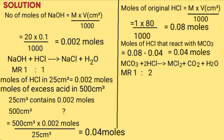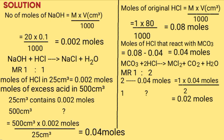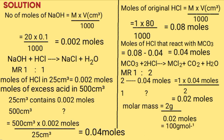Moles of MCO₃: since 2 moles of HCl corresponds to 1 mole of MCO₃, and we have 0.04 moles of HCl, moles of MCO₃ = 0.04 / 2 = 0.02 moles. Molar mass of MCO₃ = mass in grams / number of moles = 2 / 0.02 = 100 g/mol, so RFM = 100. To find M: M + 12 + (16 × 3) = 100 → M + 60 = 100 → M = 40.